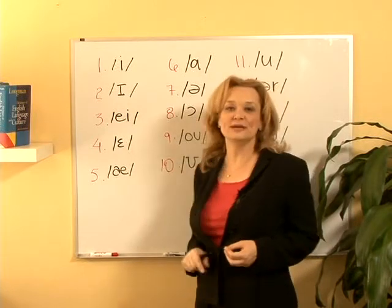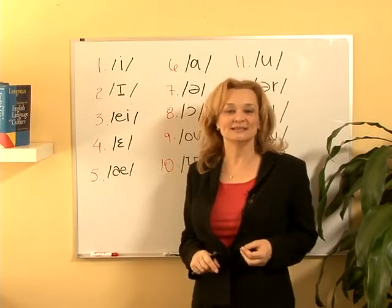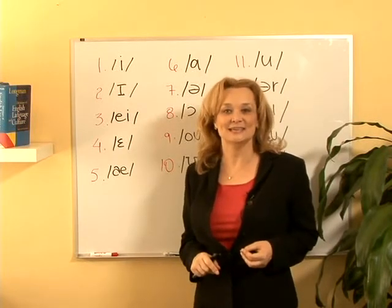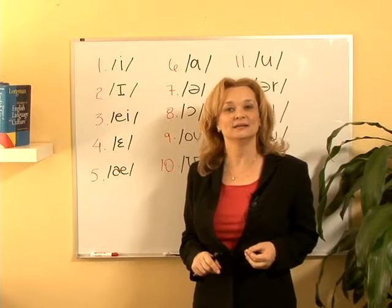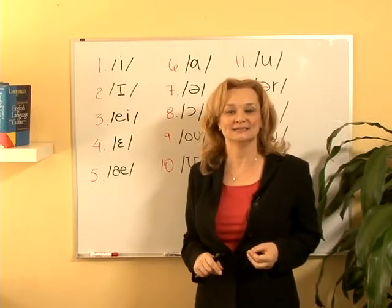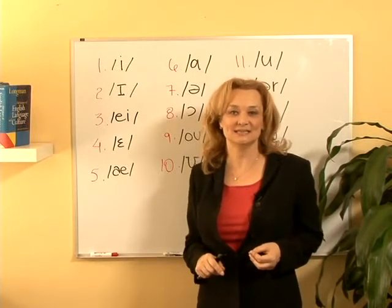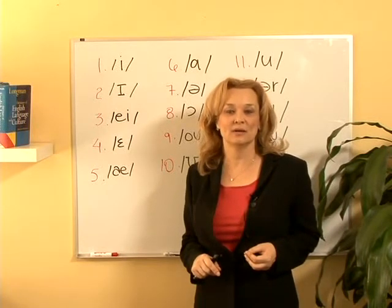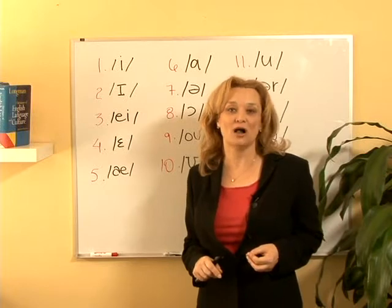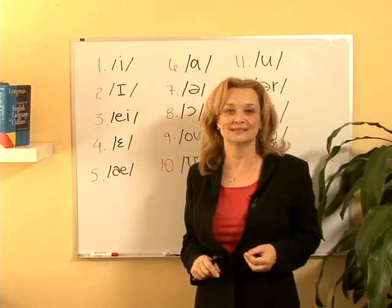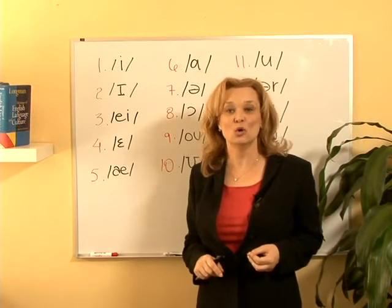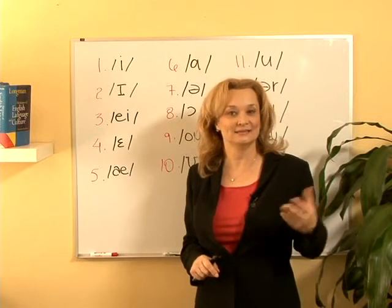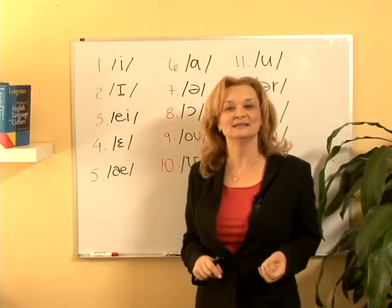Vowel number three is 'ee'. Examples: late, gate, baseball, stay. Let's say it again: ee.